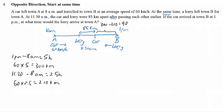We know the lorry traveled from B towards A. At 11:30 AM, the lorry has traveled a total of 85 plus 90, which equals 175 km. This is the total distance the lorry has traveled. The lorry also took 3.5 hours, since 11:30 AM minus 8 AM is 3.5 hours. So we take 175 divided by 3.5 — distance divided by time — to get the speed of the lorry.